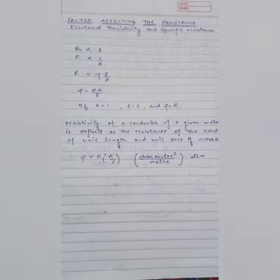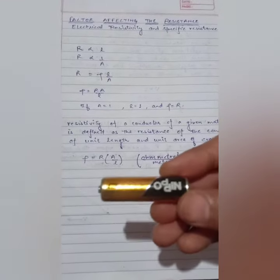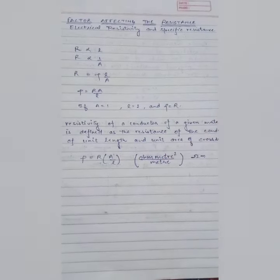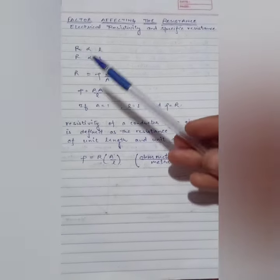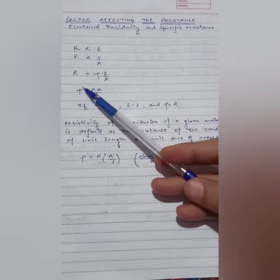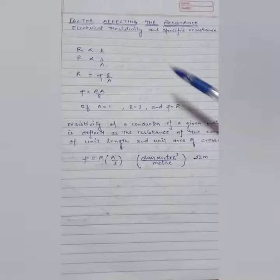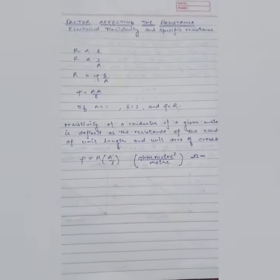So if we talk about resistance, resistance is equal to rho L upon A. This rho is electrical resistivity or specific resistance.